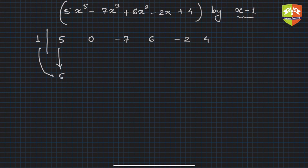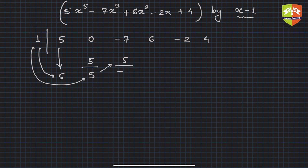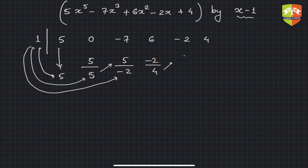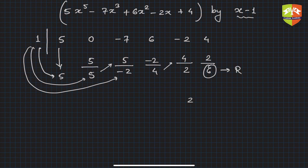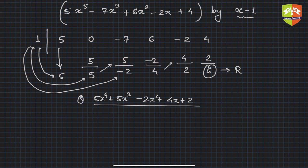Bring down 5. Then 1 times 5 is 5; add to get 5. Then 1 times 5 is 5; add -7 to get -2. Then 1 times -2 is -2; add 6 to get 4. Then 1 times 4 is 4; add -2 to get 2. Then 1 times 2 is 2; add 4 to get 6. The remainder is 6, and the quotient is 5x⁴ plus 5x³ minus 2x² plus 4x plus 2.